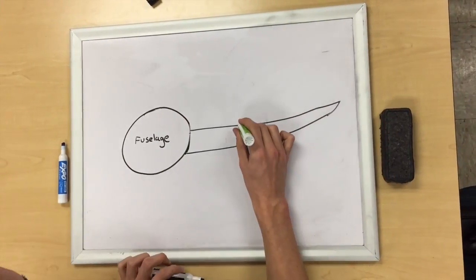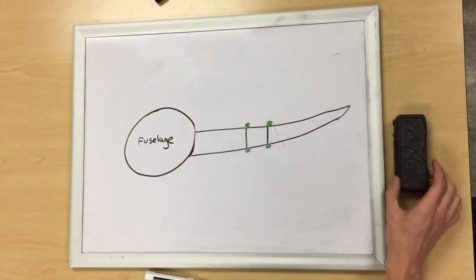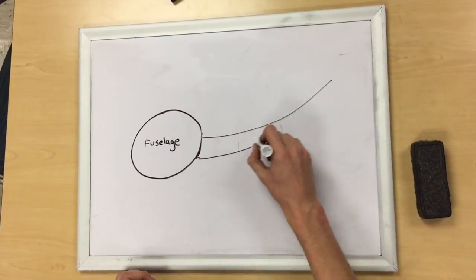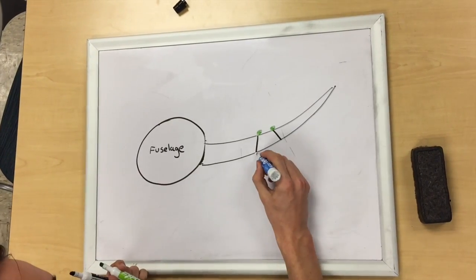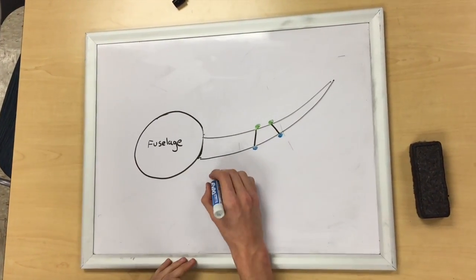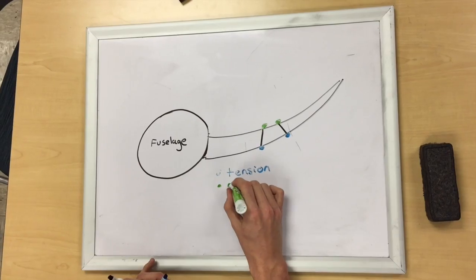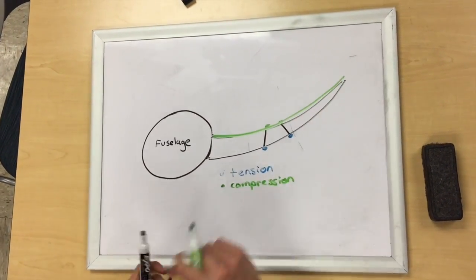When no lift is applied, the wing isn't bent and the two lines shown here are vertical. However, when the lift acts on the wing, it bends and the two points on top move closer together while the two points on the bottom move further apart. This indicates that the top of the wing is in compression while the bottom is in tension.